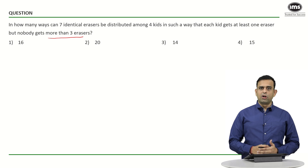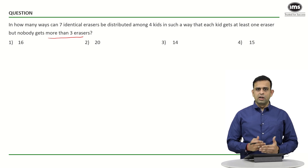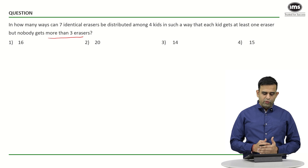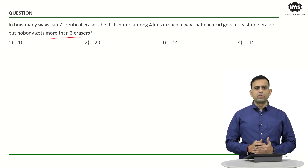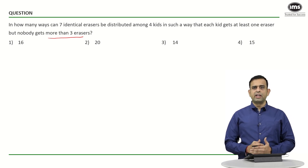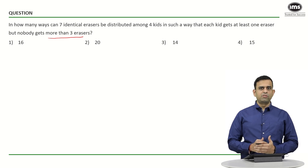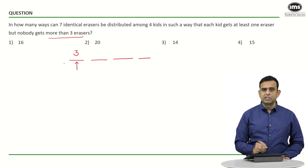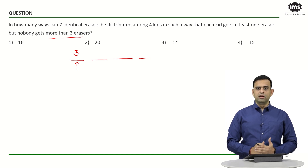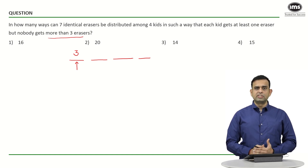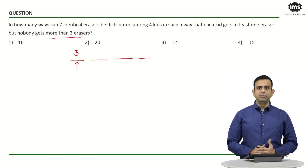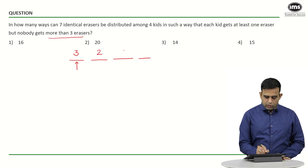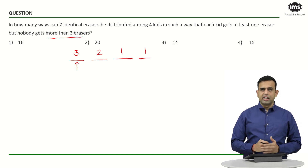We can look at two methods to solve this question. Let's look at the first one using a case-by-case method. Since no one can get more than three, the maximum a kid can get is three erasers. With a total of seven erasers, let's look at Case 1: suppose one of the four kids gets three erasers. Then four erasers remain to be given among three friends such that each gets at least one. The only possibility is to split four as 2-1-1, so one more kid gets two, and the other two each get one.